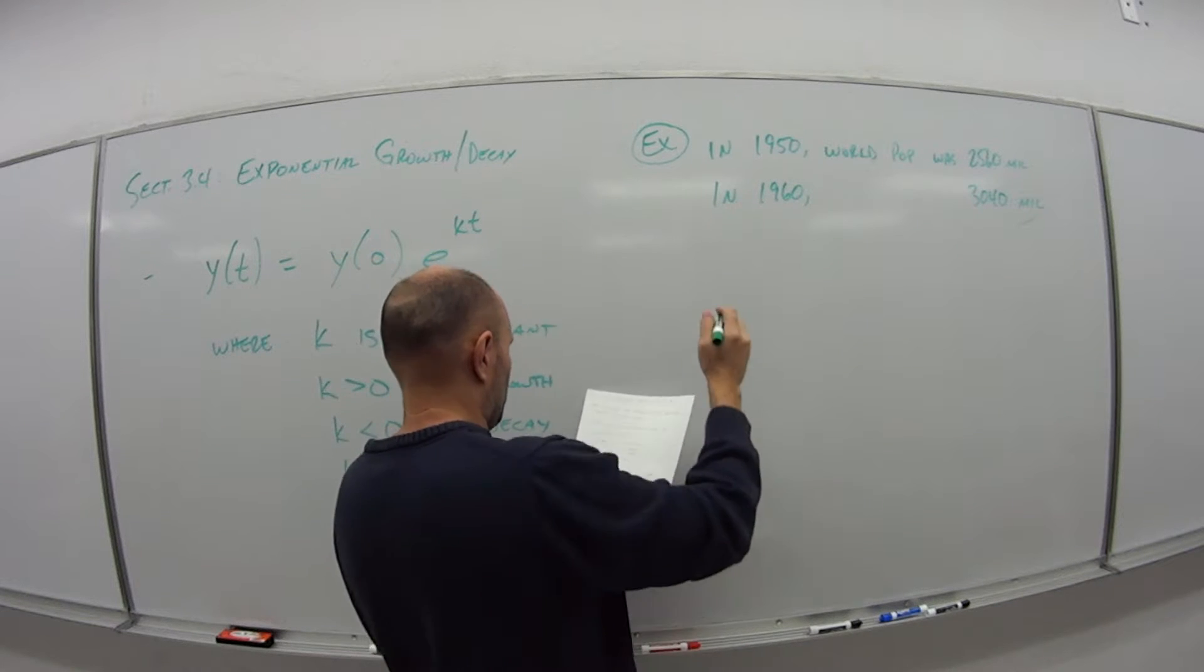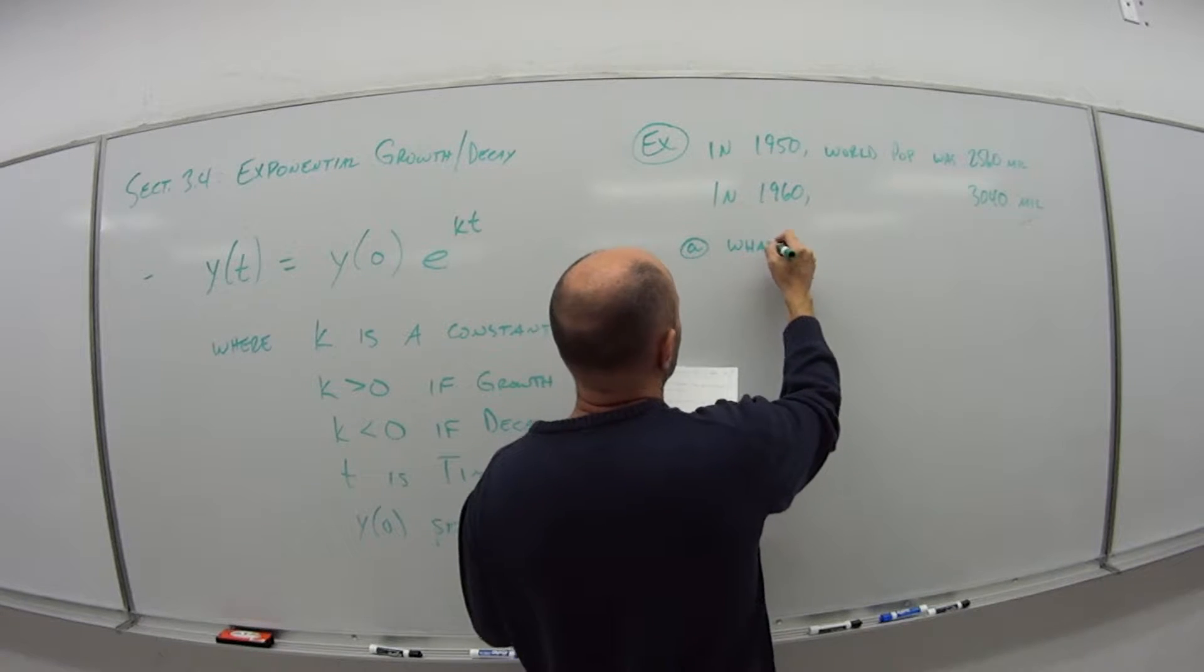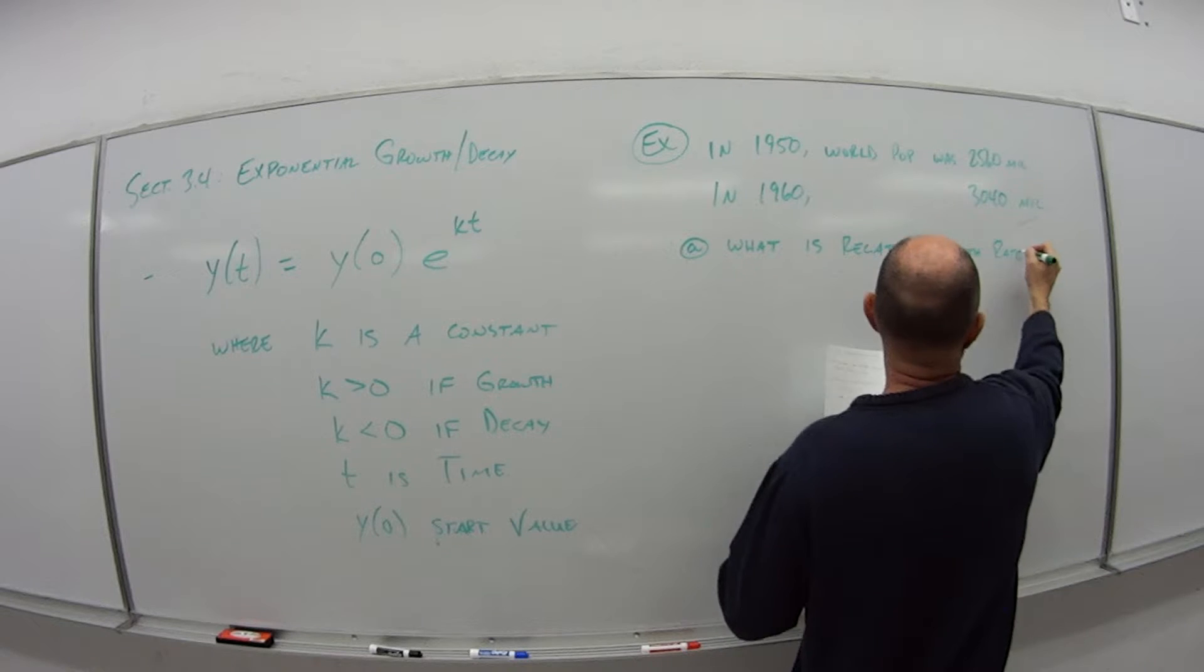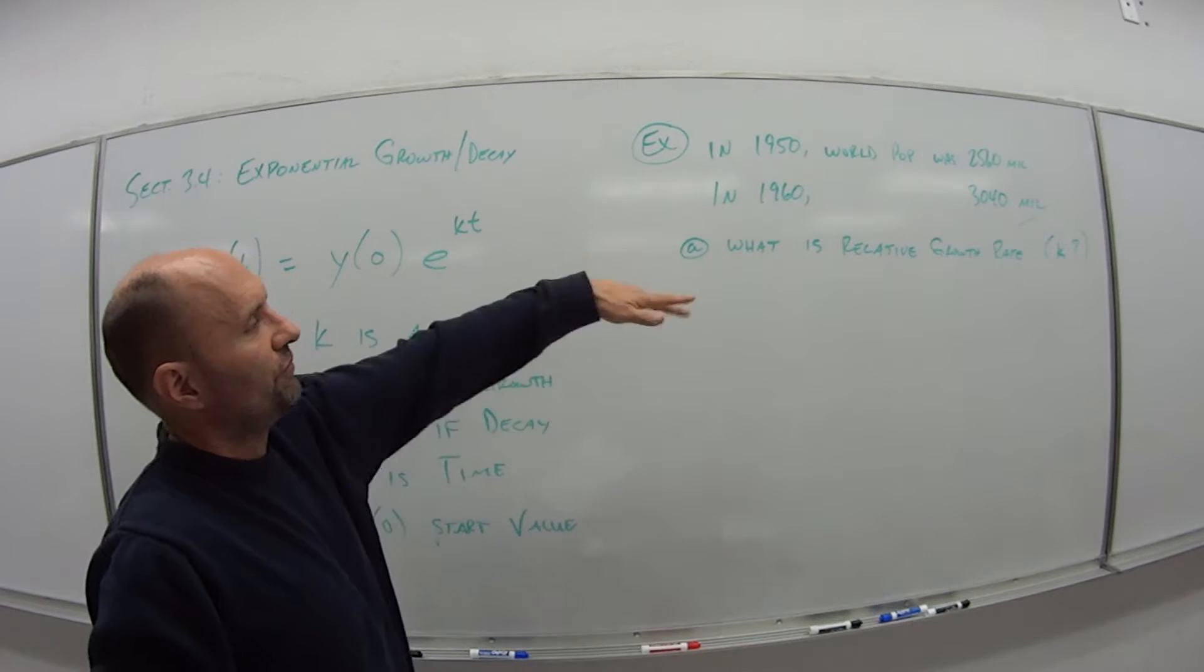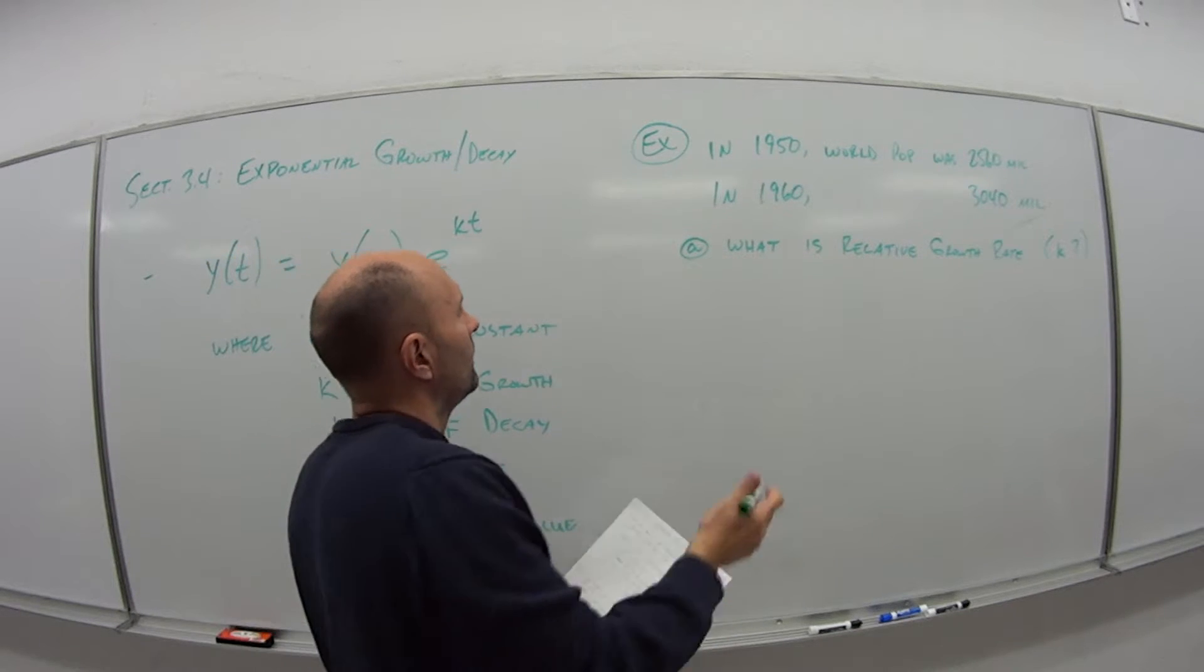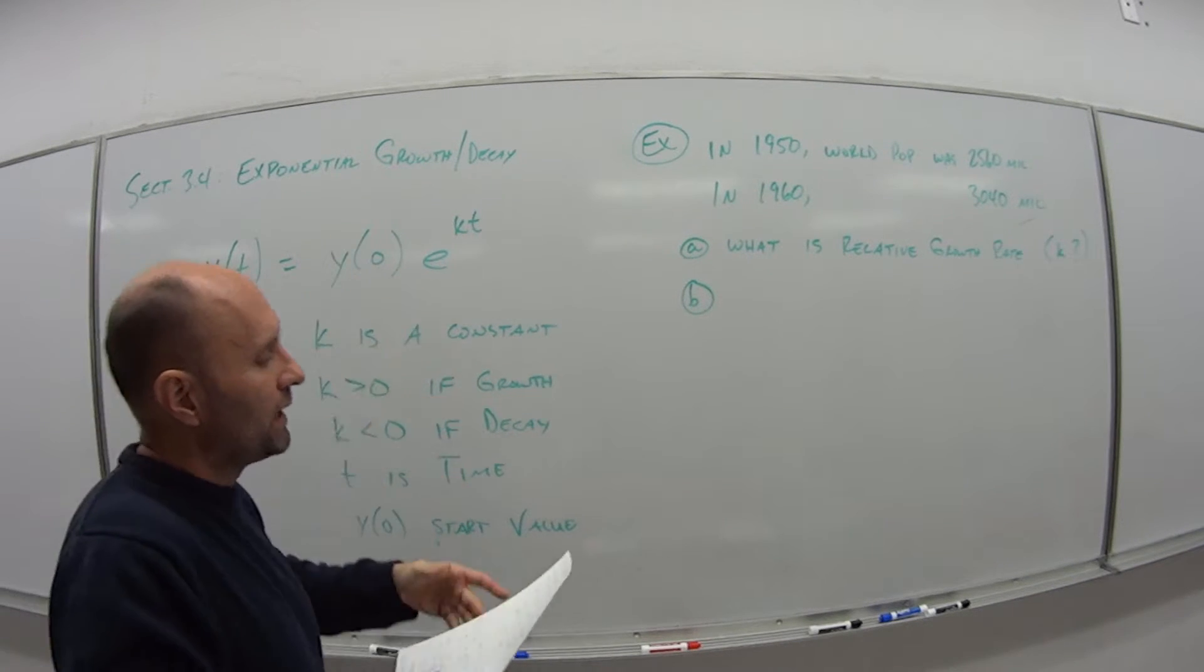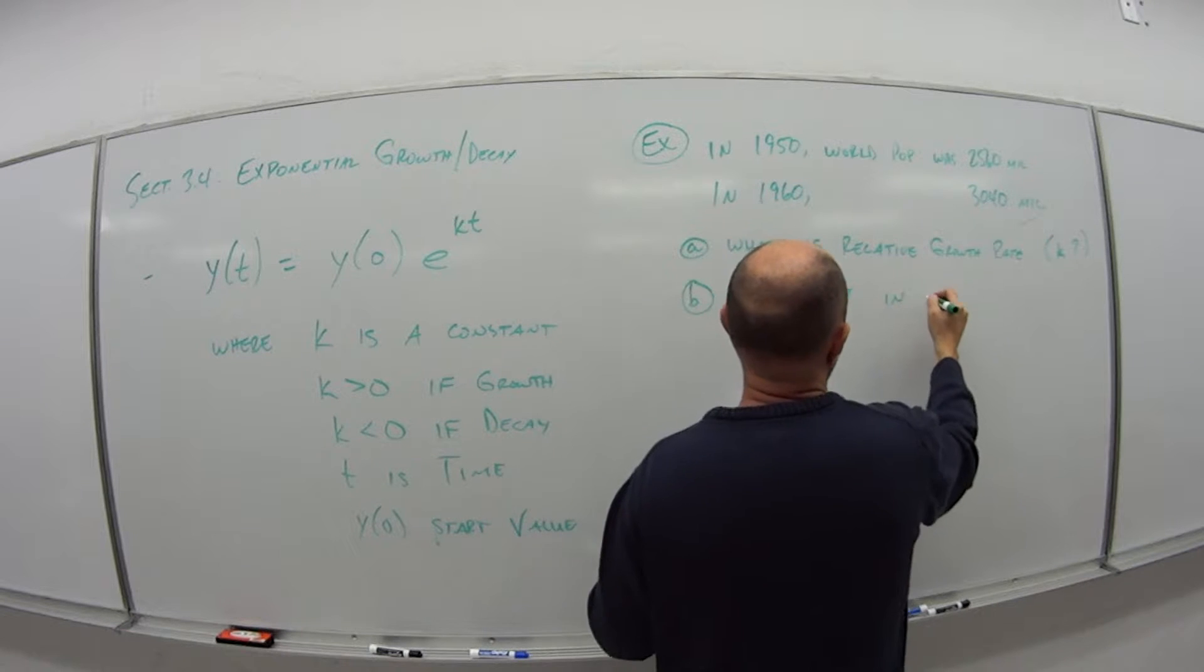So we want two questions. First, let's call it A. What is the relative growth rate? And this is just asking us, what's our value for k? k is our growth rate in this case. And then once we find that k, we can generate a formula, an exponential growth equation, and we can use that to estimate. So we want to know what's the estimated population in 1993.